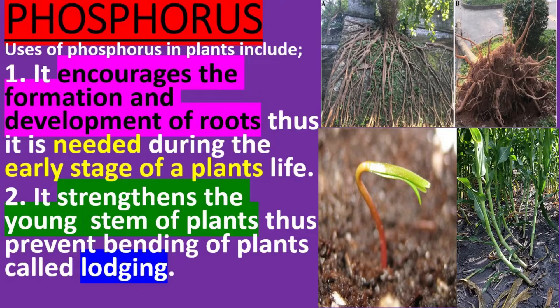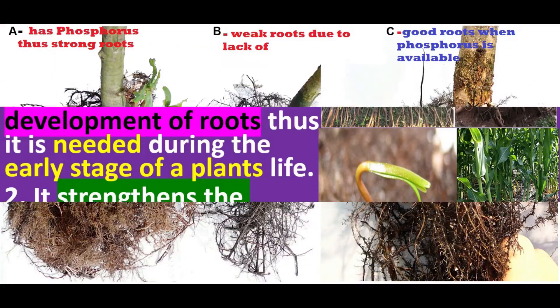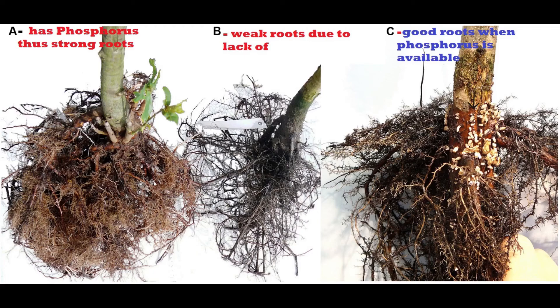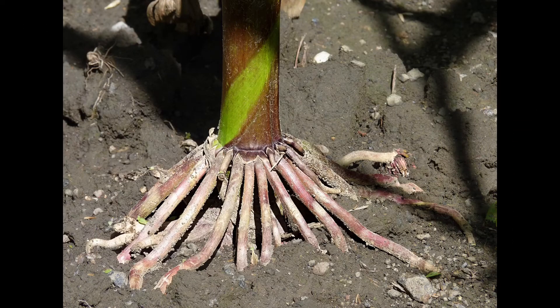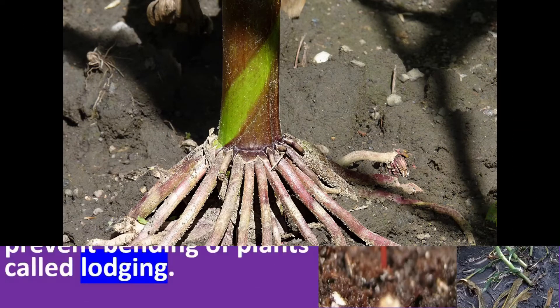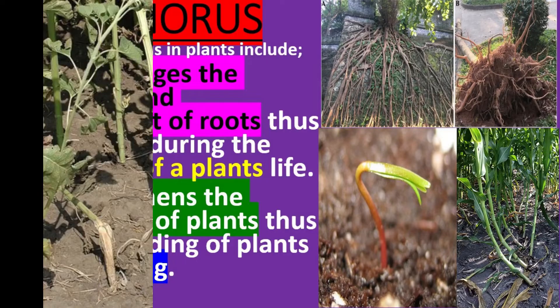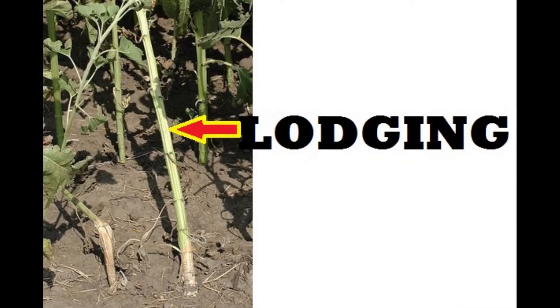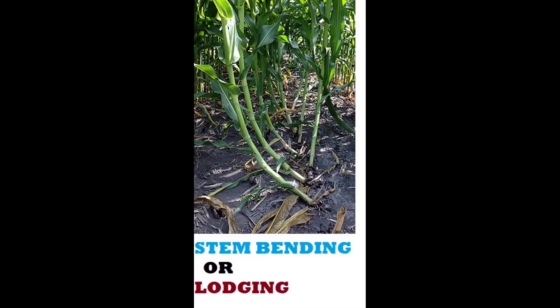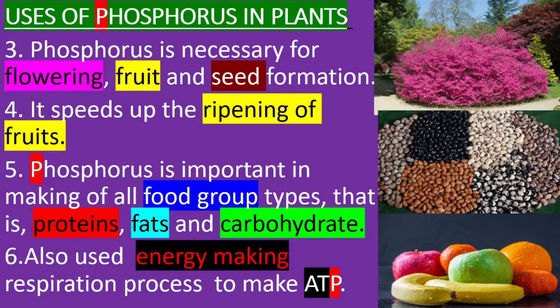Uses of phosphorus in plants include: one, it encourages the formation and development of roots, thus it is needed during the early stage of a plant's life. It strengthens the young stem of plants, thus preventing bending of plants, called lodging. Phosphorus is also necessary for flowering.